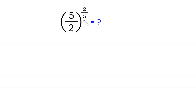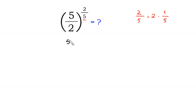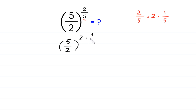We can write this 2 over 5 as 2 times 1 over 5. So the expression becomes 5 over 2, whole to the power 2 times 1 over 5.